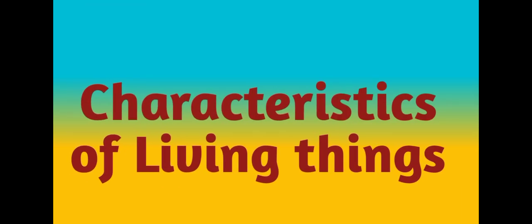Our earth is a beautiful place to live. There are different types of trees, plants, birds, and animals — they are all living things. You and I are human beings; we are also living things. Everything around us can be grouped into living things and non-living things. A living thing is anything that is alive now or was once alive.